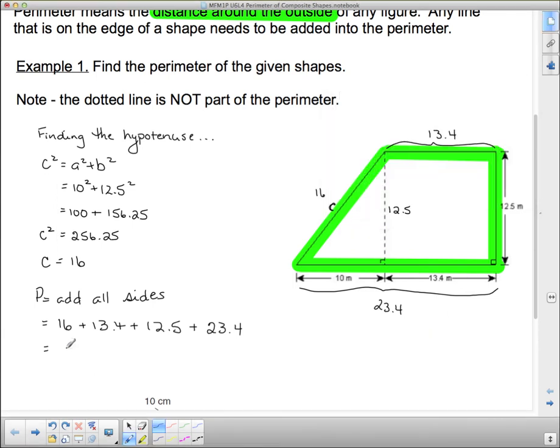And we get 65.3. Now, perimeter is a straight line distance, so that's going to be meters.